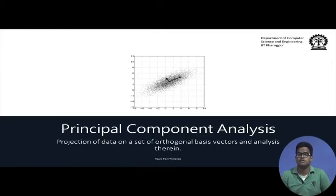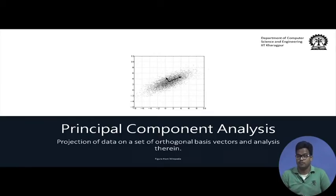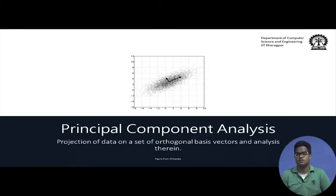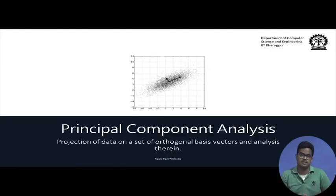The principal components are the eigenvectors of the covariance matrix of the data. We will study how PCA works and how we can use it to reduce the dimensionality of face images and use the reduced-dimensional face vectors for face recognition.